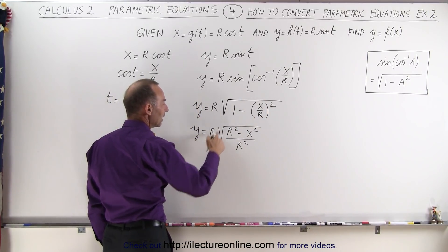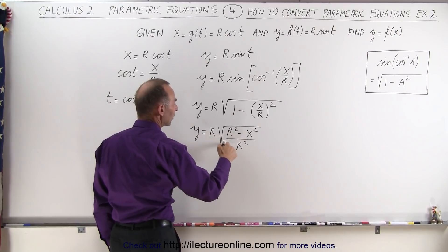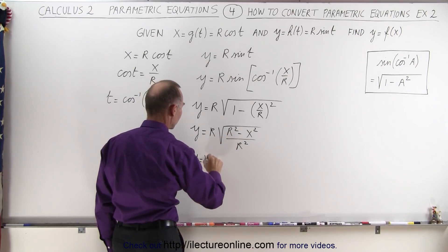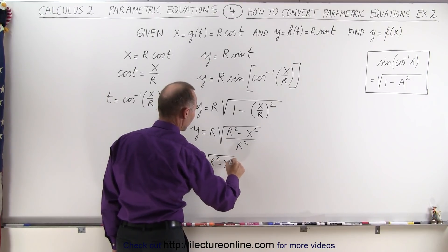We can take the r outside the radical, and r divided by the square root of r squared cancels. So we get y equals the square root of r squared minus x squared.